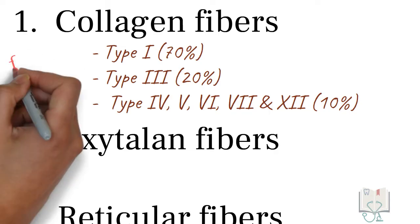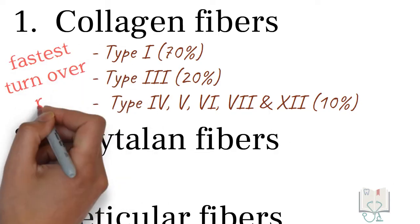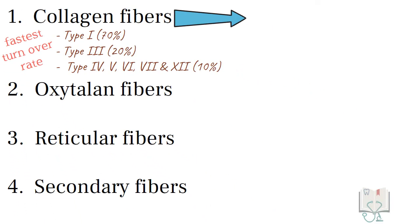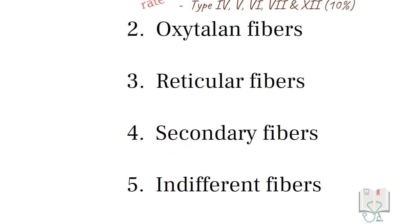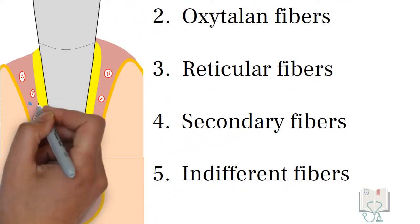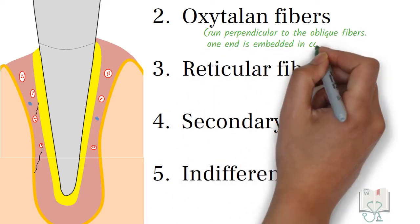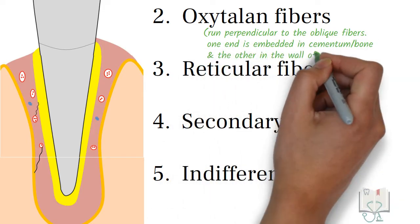The collagen fibers in periodontal ligament have the fastest turnover rate. Most of the collagen fibers are arranged in bundles called principal fibers. Oxytalan fibers run perpendicular to the oblique fibers. One end is embedded in cementum or bone and the other in the walls of blood vessels.